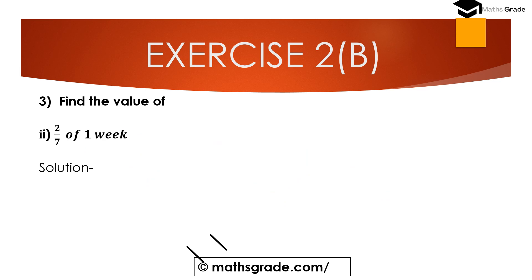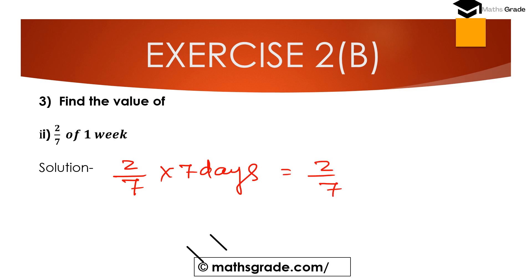Question number 3, second part: 2 divided by 7 of 1 week. 1 week is 7 days. So 2/7 multiplied by 7 — the 7s cancel out, giving us 2. The answer is 2 days.